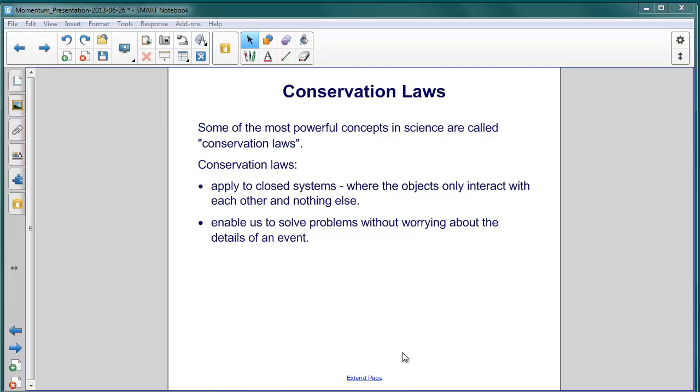and amongst these mass for example and energy are conserved. These conservation laws apply to closed systems where the objects only interact with each other and nothing else. That means that there are no external forces acting on any of the objects in the system. The benefit of conservation laws is that they enable us to solve problems without worrying about the details of a particular event.